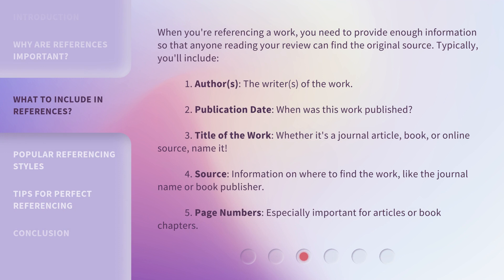When you're referencing a work, you need to provide enough information so that anyone reading your review can find the original source. Typically, you'll include: Authors — the writers of the work; Publication Date — when was this work published; Title of the Work — whether it's a journal article, book, or online source, name it; Source — information on where to find the work, like the journal name or book publisher; and Page Numbers — especially important for articles or book chapters.